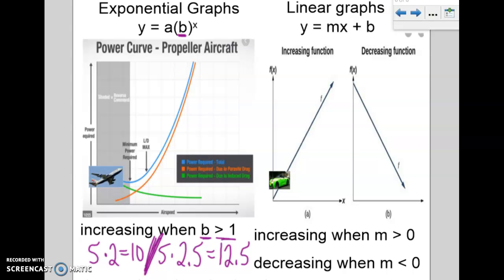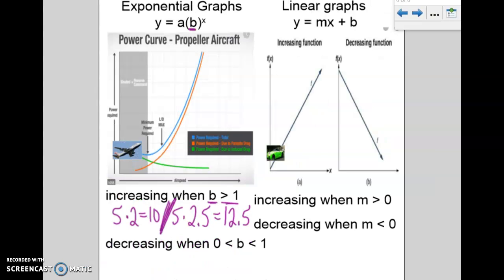Now it's going to cause it to decrease when the number is between 0 and 1. So let's take that same 5 and multiply it by, let's say just 1 half. So half of that is going to cause it to be 2.5.